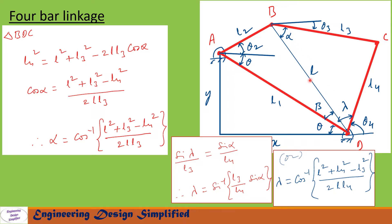From triangle BCD, let us find alpha and lambda. To find alpha, applying the cosine rule: l4 squared equals l squared plus l3 squared minus 2·l·l3·cos(alpha), which gives cos(alpha) = (l squared + l3 squared − l4 squared)/(2·l·l3). Therefore alpha equals cos inverse of (l squared + l3 squared − l4 squared)/(2·l·l3), and we can find alpha for any given theta2.